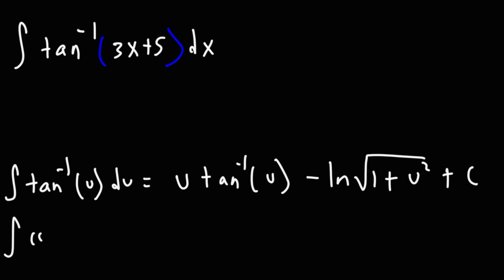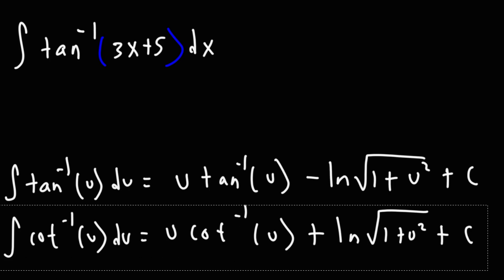Now, very similar to that one, we have arc cotangent u du is going to be u arc cotangent of u. And instead of minus, it's going to be plus the natural log of the square root of 1 plus u squared, as opposed to 1 minus u squared. So those are the arc tangent and arc cotangent functions. And you can find them in my formula sheet in the links below.